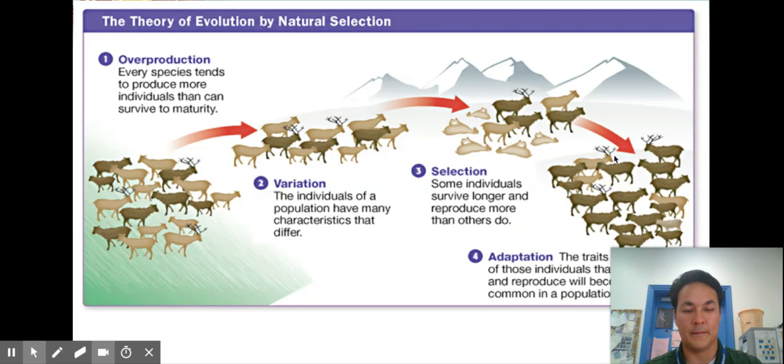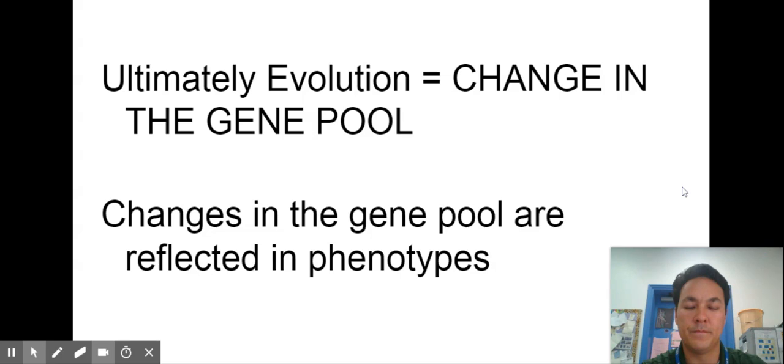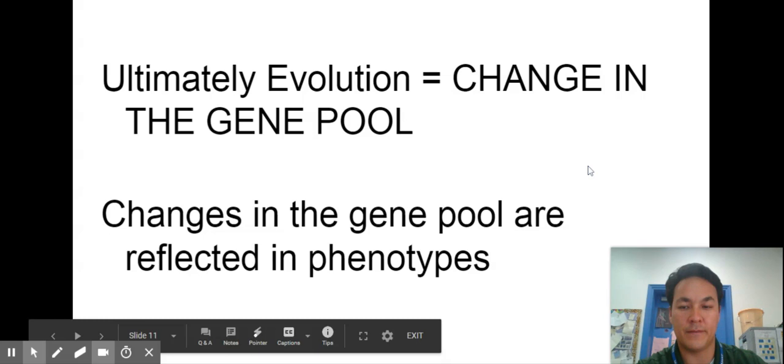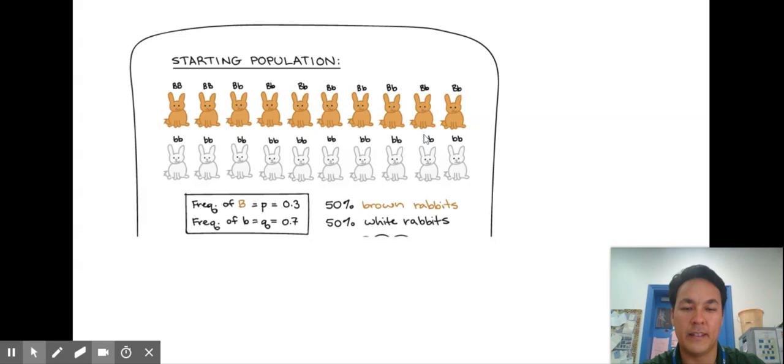All right so ultimately we said it can be a change in the gene pool these are reflected in phenotypes what a phenotype means students is a physical trait here would be an example genetic wise and this is just kind of goes off of Mr. Anderson's video with the cards and the red-headed people.